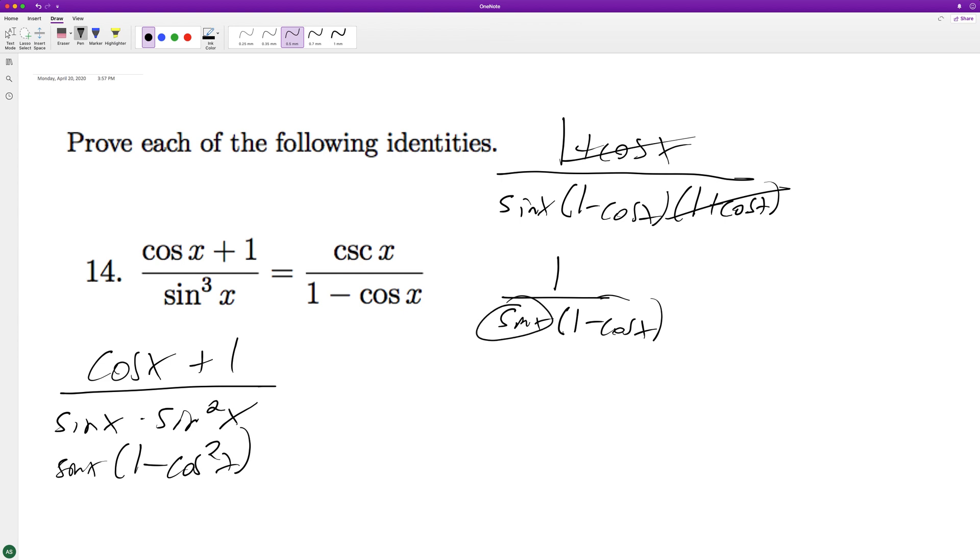And we already got this, but what happens here is you can rewrite this as 1 over 1 over sine of x, which is the same thing as cosecant x here, and then it just flips up, and that's how you get it on the top.